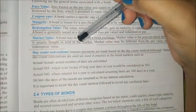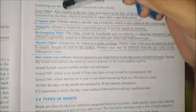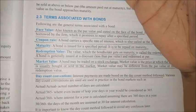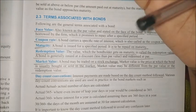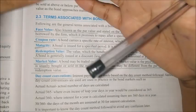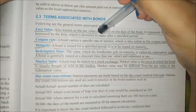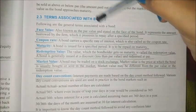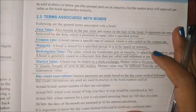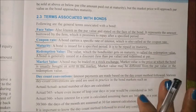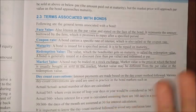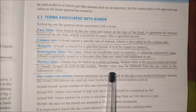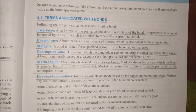Market value: a bond can be traded in the stock exchange market. So possibly the face value of a bond is 100 rupees, but if many people are interested in that company's bond — demand is more — the price will increase to 110 or 120. That is called market value. It is based on market scenario, inflation, demand and supply, and many other factors.